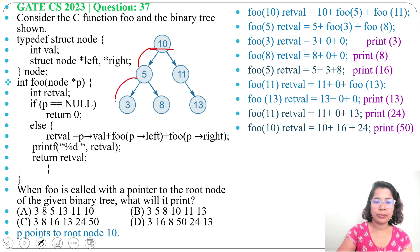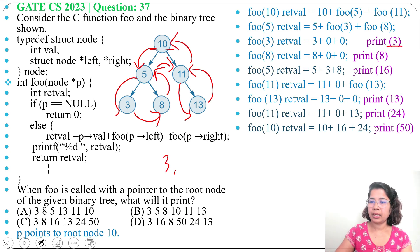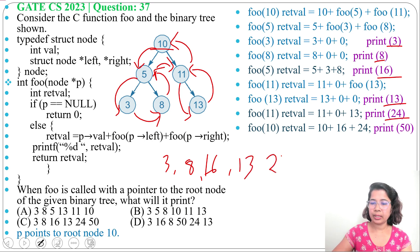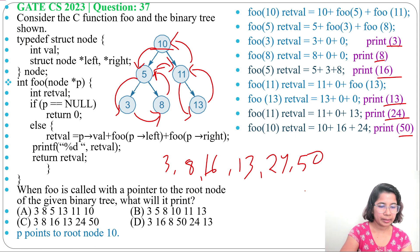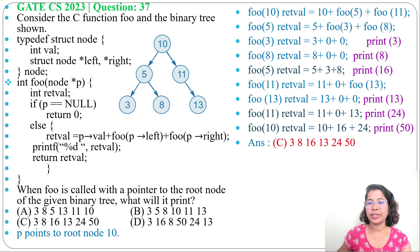The call order was: foo(10), foo(5), foo(3), foo(8), then foo(11), foo(13). The print sequence is: first 3, then 8, then 16, then 13, then 24, then 50. Checking the options, this matches option C: 3, 8, 16, 13, 24, 50. The answer is option C. Just maintain the stack to track how functions are called.